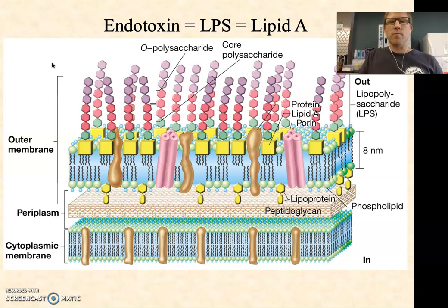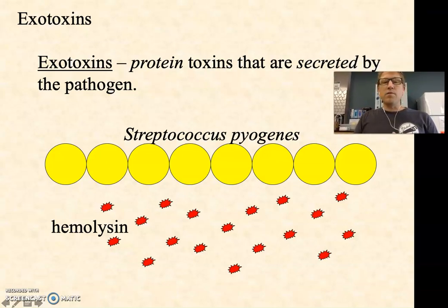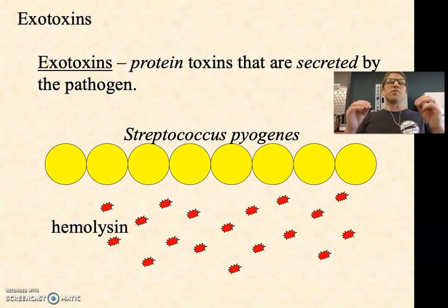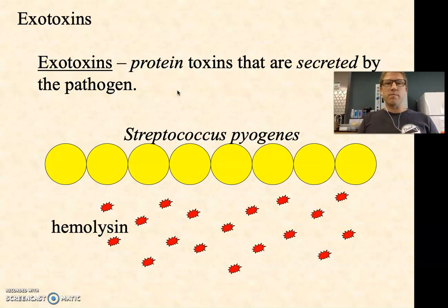Typically when we're talking about bacterial toxins, we're thinking about exotoxins or secreted toxins — protein toxins that are secreted by the pathogen. Viruses don't make toxins because they have no metabolism and can't secrete anything, so these toxins are really a function of bacterial virulence, not viral virulence. Exotoxins are toxic proteins that are secreted by bacteria.